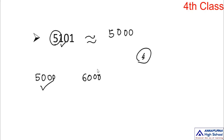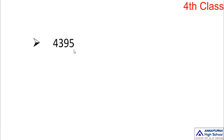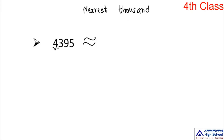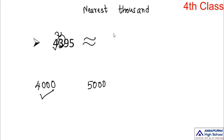Next: 4,395. We need to find the nearest thousand. Step 1: 4 is in the thousands place. Step 2: 4,395 lies between 4,000 and 5,000. Step 3: the right-next digit is 3, which belongs to the small number family. So the answer is 4,000.